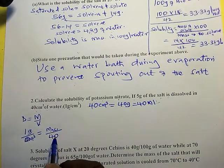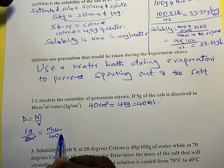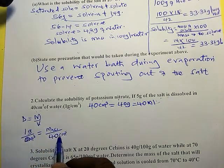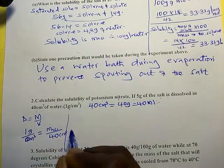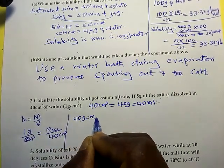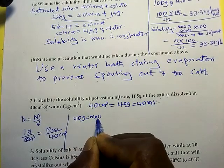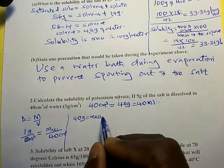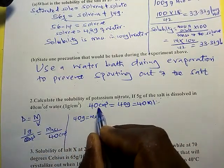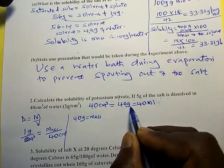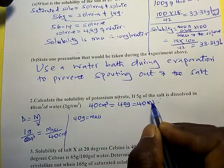Cross multiplying: mass equals 1 times 40, which gives 40 grams. So 40 centimeters cubed is the same as 40 grams, which is the same as 40 ml of water.